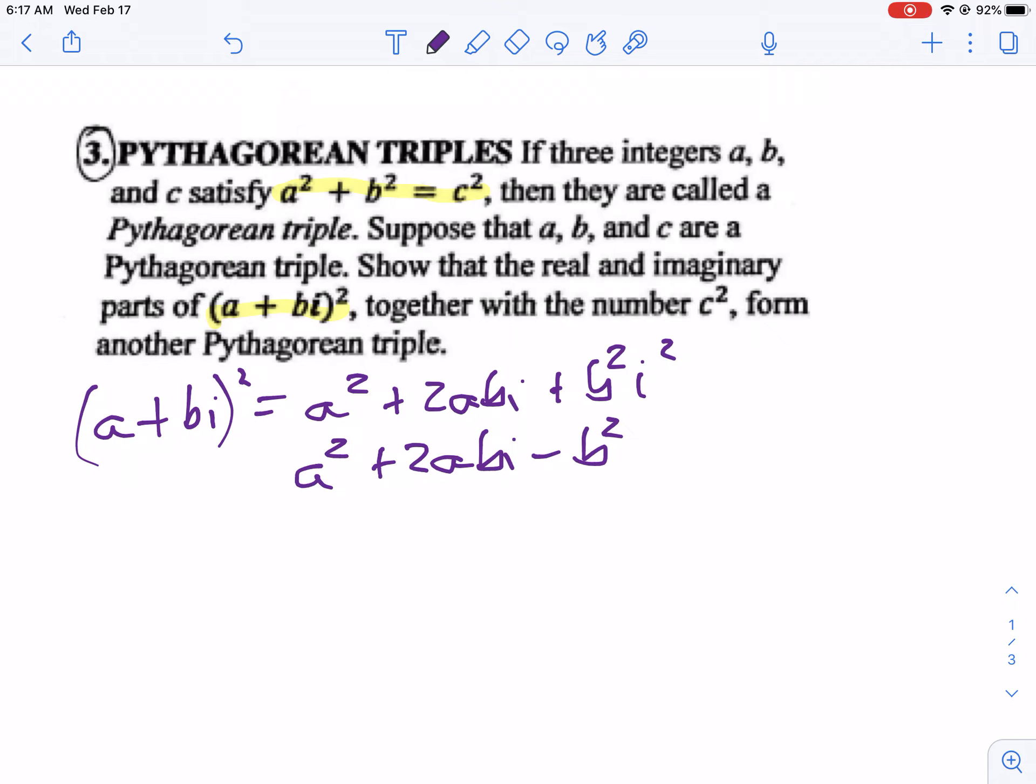Let's put our real parts together and our imaginary parts together. So we're going to have A squared minus B squared. That part is going to be the real part. And then our imaginary part is going to be 2ABI.